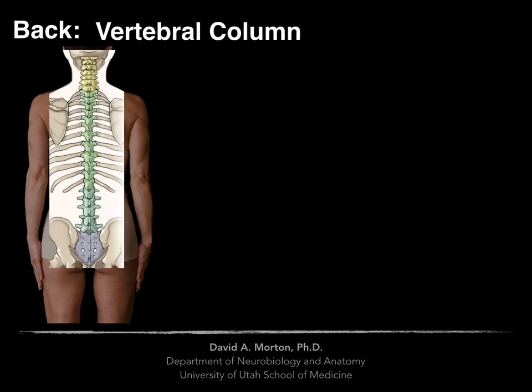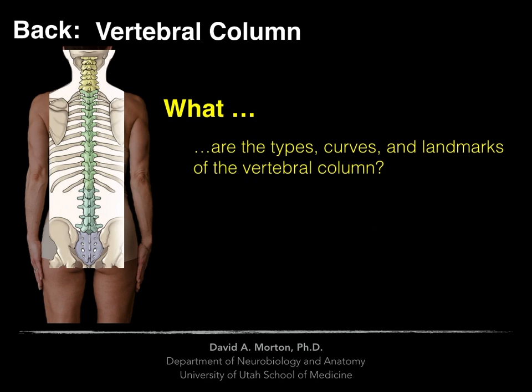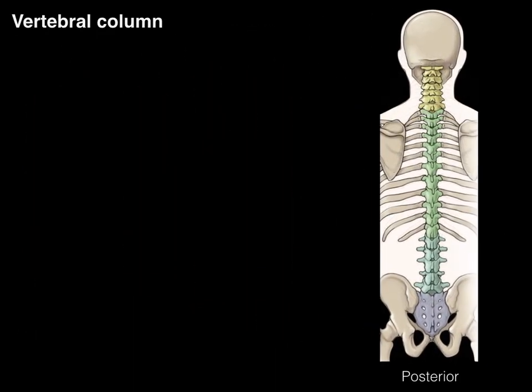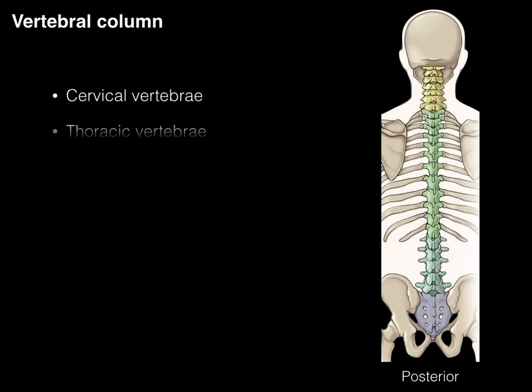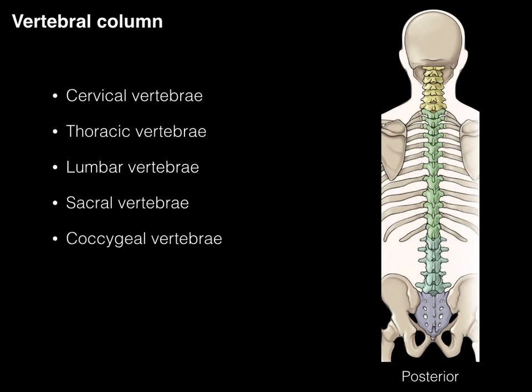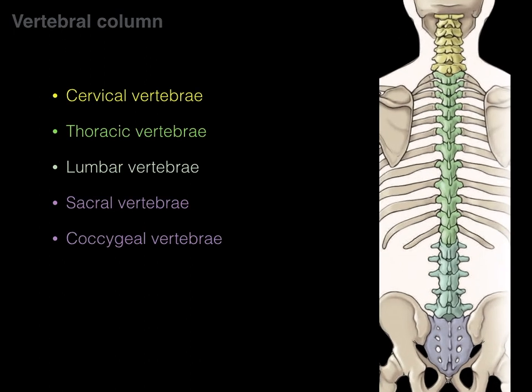Now let's talk about the vertebral column in the context of the back and answer the question: what are the types, curves, and landmarks of the vertebral column? Here we have the vertebral column and it has the following components or types of vertebrae: cervical, thoracic, lumbar, sacral, and coccygeal.